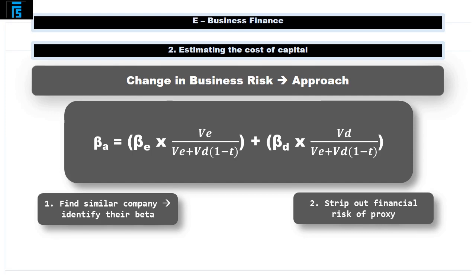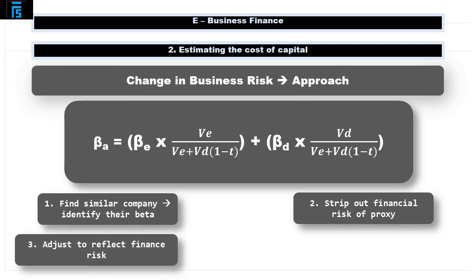A project-specific cost of capital: the total risk faced by an organisation can be broken down into two elements — business risk and financial risk. It is essential that the return required from a project takes changes in both of these into account. Where a project being considered will change the business risk of an organisation, find a similar company that already operates in the new business area — a proxy company — and identify their beta, which was introduced in the cost of equity presentation.